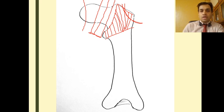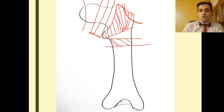Moving on, from the level of the lesser trochanter to about 5 centimeters below it, you have the subtrochanteric zone. Fractures in this region are called subtrochanteric fractures.